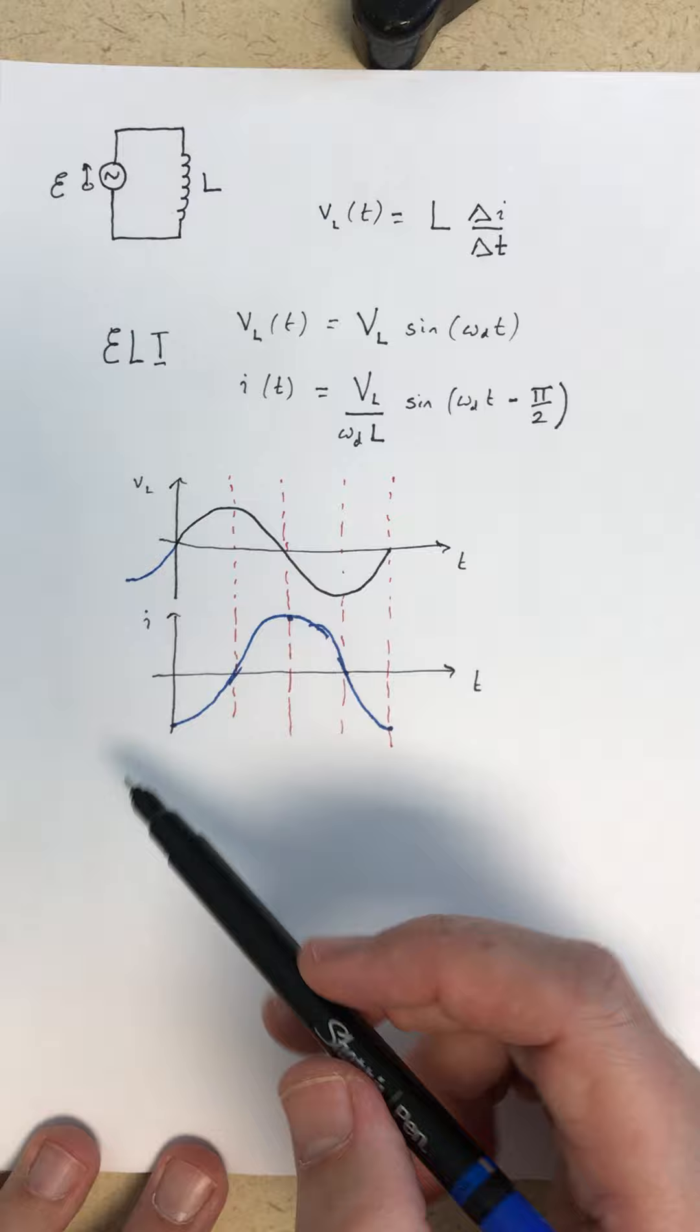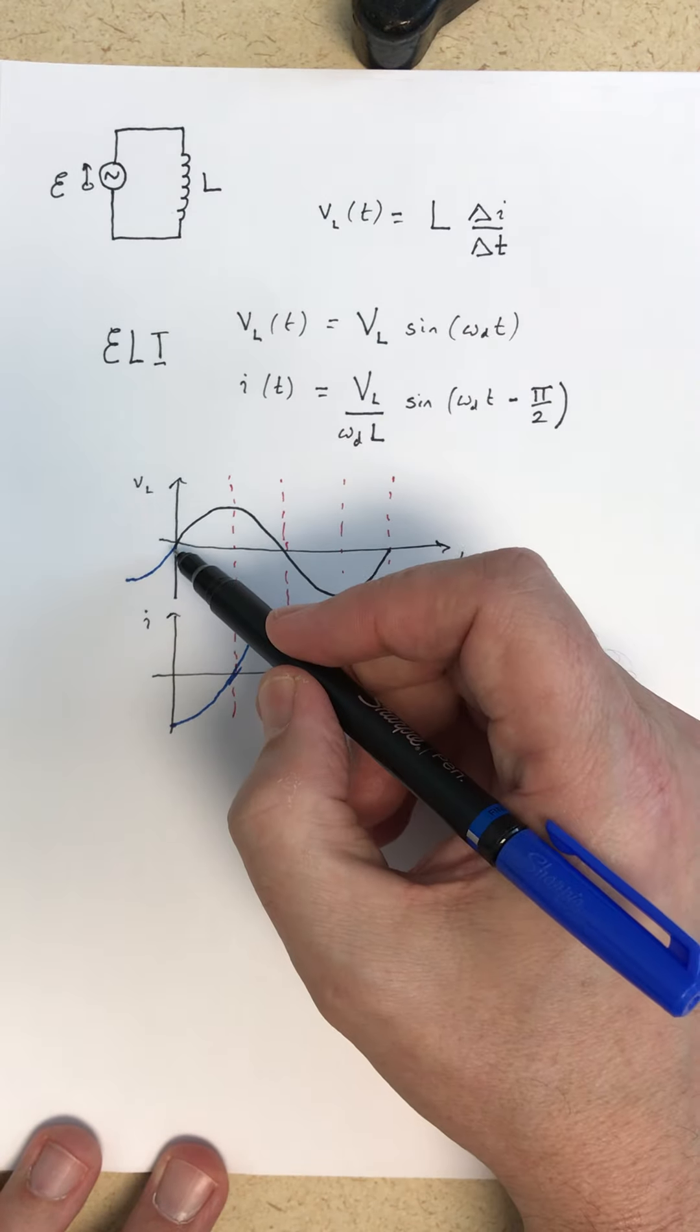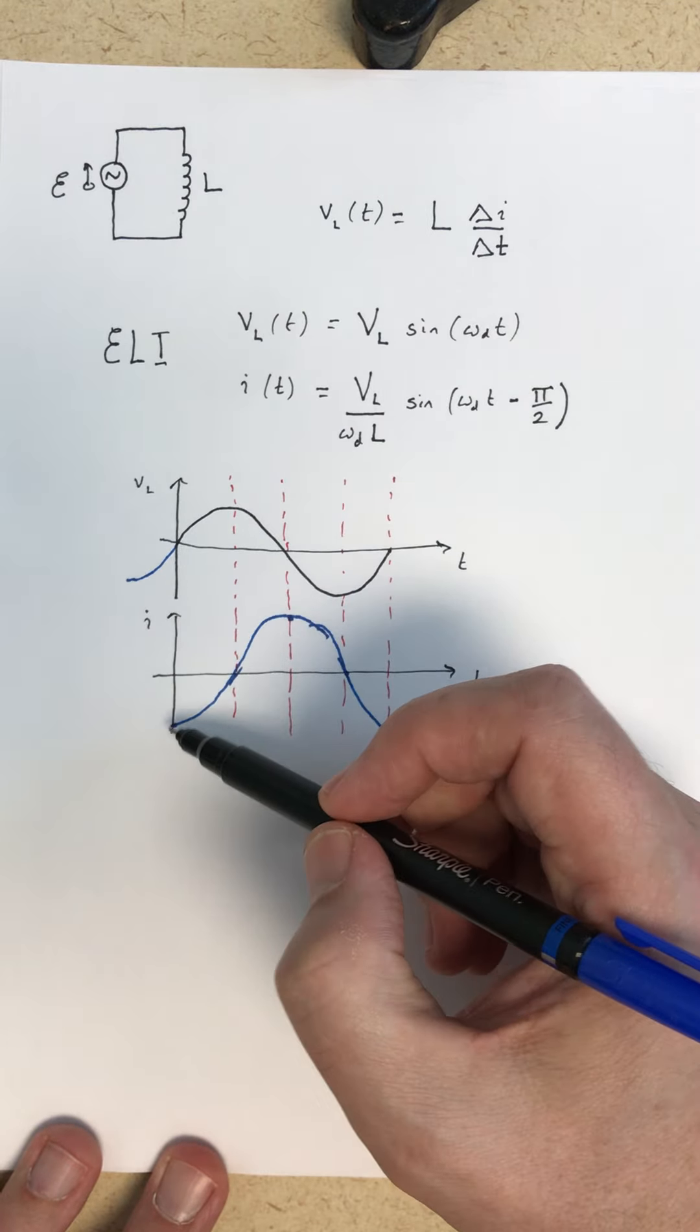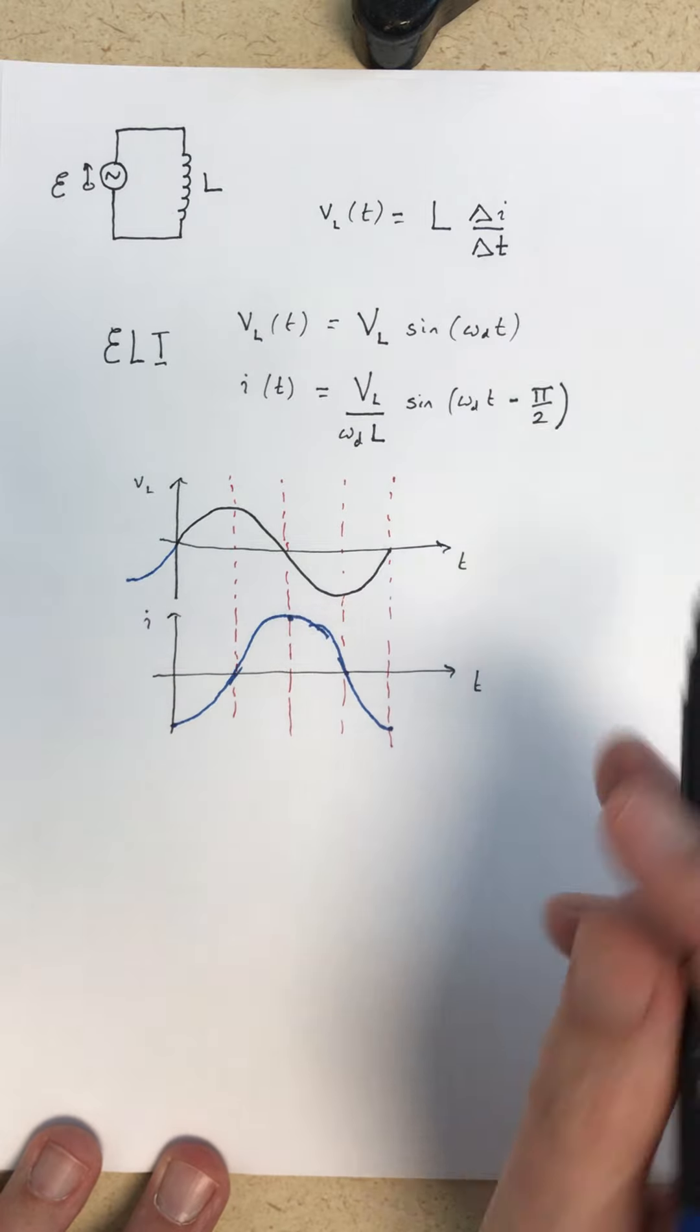From the plots, you can see that indeed for an inductor, the voltage is leading the current. The voltage is zero when the current is minimum, the voltage is max when the current is zero, and on and on.